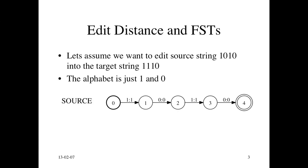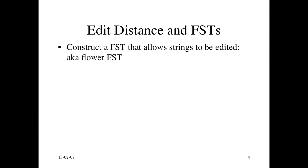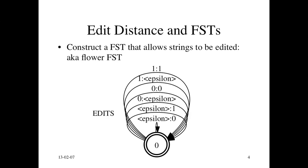So here's the source FST. It just represents the source string 1010. And the target string is 1110. So nothing very interesting to see here. What is interesting is the edit FST. And that's what it looks like. And it's sometimes called a flower FST, because I guess if we squint at it in a certain way, it looks like a flower. I don't really see it, but anyway, people say that.